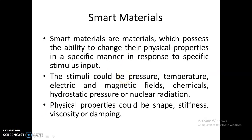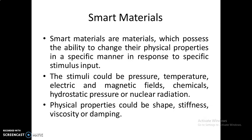By definition, smart materials are materials which possess the ability to change their physical properties in a specific manner in response to specific stimulus input. The input could be pressure, temperature, electric and magnetic fields, chemicals, hydrostatic pressures, or nuclear radiations. The output or physical properties may be shape of the material, stiffness of the material, viscosity, or the damping capability.